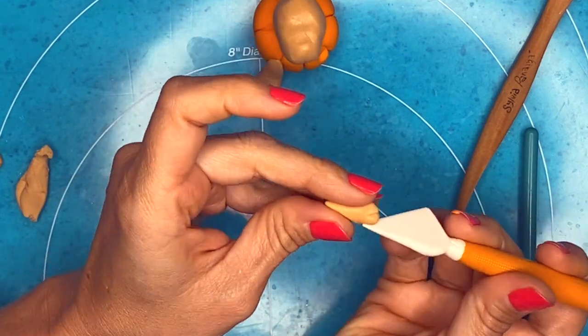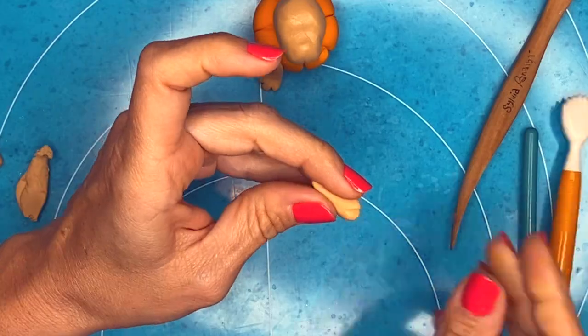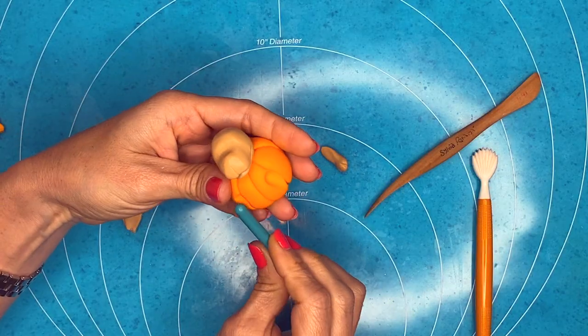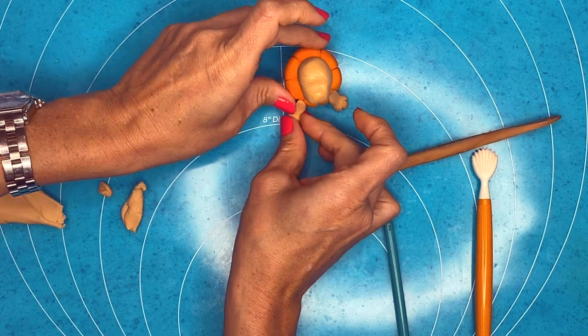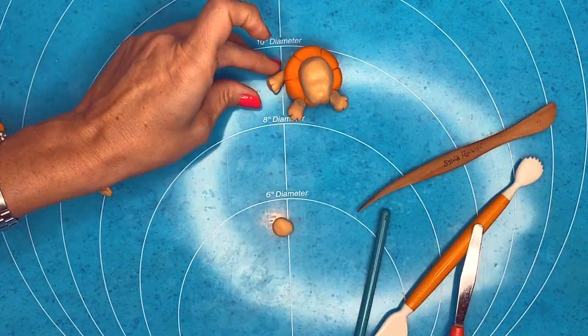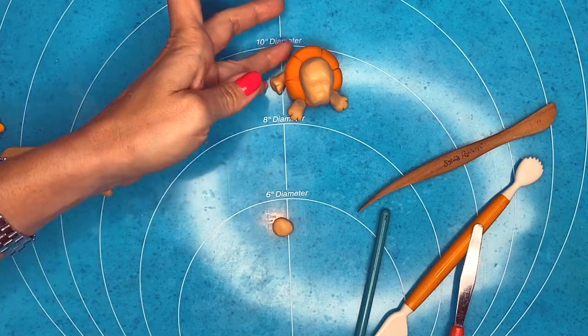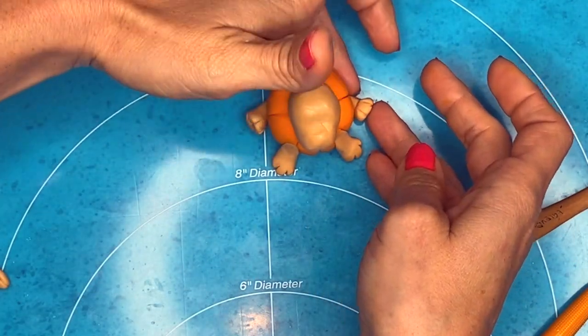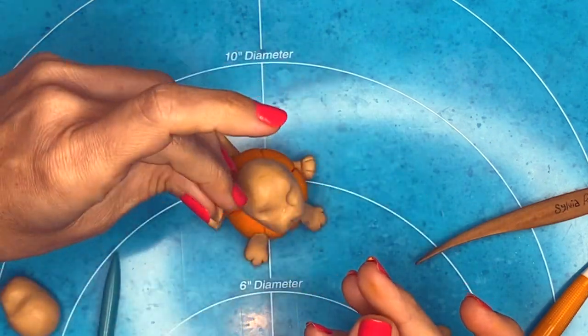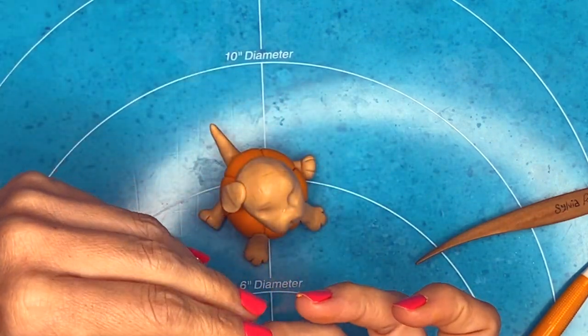I made an indentation on the pumpkin with my tool so that I can place those paws, those legs on it. And then I make some back legs the same way as I made the front legs and a little tail.